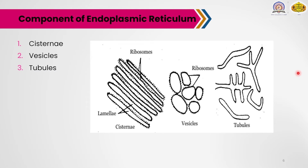The third component is tubules. Tubules are branched structures forming a reticular system along with the cisternae and vesicles. Their diameter ranges from 50 to 190 nanometers, and they occur in almost all types of cells. These are the three components of the endoplasmic reticulum.